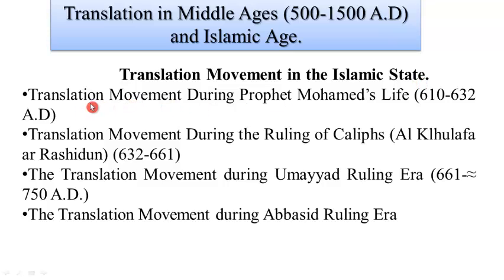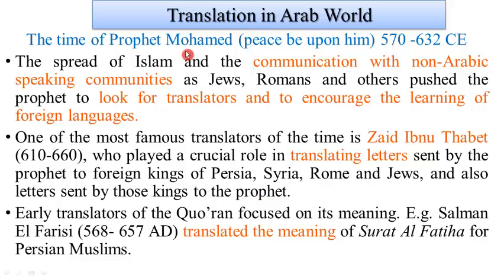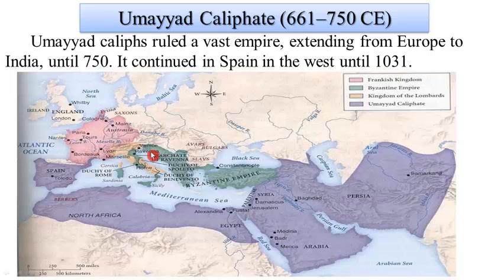There was a movement in translation during the Prophet Muhammad's life, also during the ruling of the Caliphs. The Prophet Muhammad, peace be upon him, wanted to spread Islam and encouraged translators to communicate with non-Arabic speaking communities such as the Romans and others. Zayd ibn Thabit performed this role and interpreted letters to and from Persia, Syria and Rome. Salman al-Farisi translated the meaning of Surat al-Fatiha for Persian Muslims.